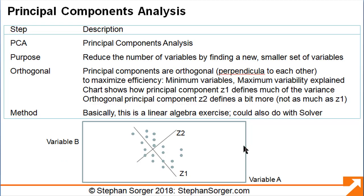We now introduce Principal Components Analysis (PCA). Its purpose is to reduce the number of variables by finding a new, smaller set of variables. The principal components found by the PCA process are orthogonal, or perpendicular to each other, to maximize efficiency. We define efficiency here as the fewest number of variables to describe the maximum amount of variance. The chart shows two original dataset variables — variable A and variable B — on the X and Y axes. The PCA process creates principal components such as Z1 and Z2.